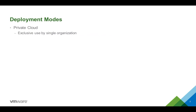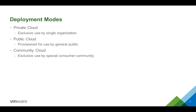VMware wants you to distinguish between deployment modes: private clouds, community clouds, public clouds, and hybrid clouds. A private cloud is usually used by only one single organization, tends to be on-premise, and is pretty much firewalled off to the rest of the world. A public cloud is the complete opposite — hosted outside, provisioned for use by the general public. Windows Azure, vCloud Hybrid Services, or AWS would be examples of public cloud.